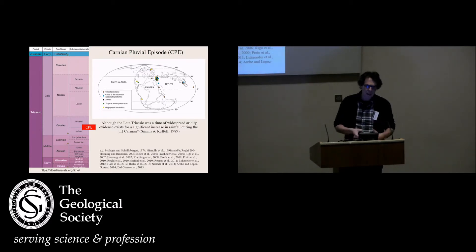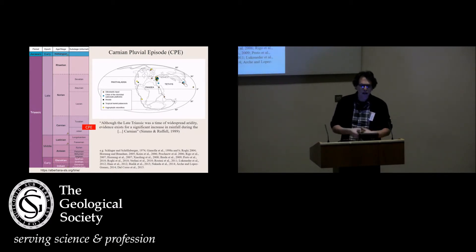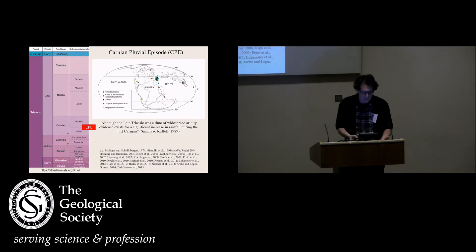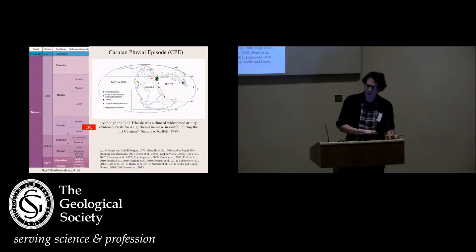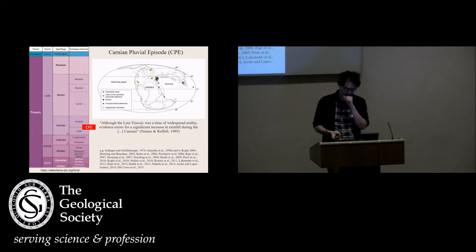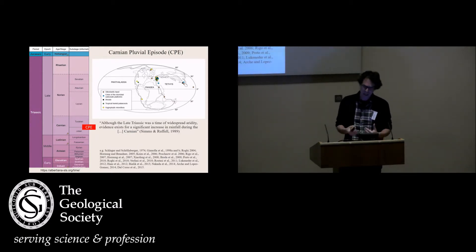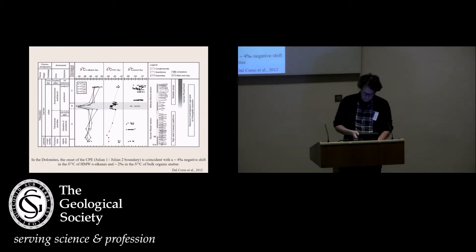The effects of this climate change are visible in many different geological settings all around the world: huge input of siliciclastic material into the basins, development of paleosols typical of tropical humid climates, anoxic conditions with deposition of laminated shales in some restricted basins especially in the Northwest Tethys realm, and a change in the carbonate factory from microbial to metazoan.